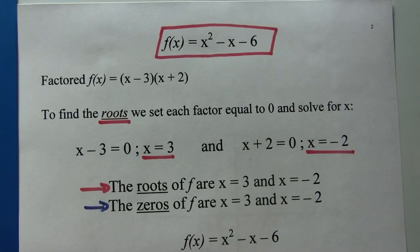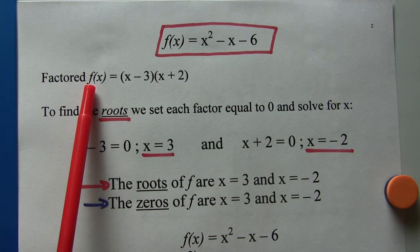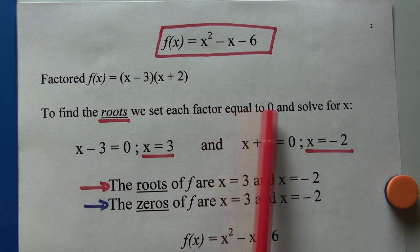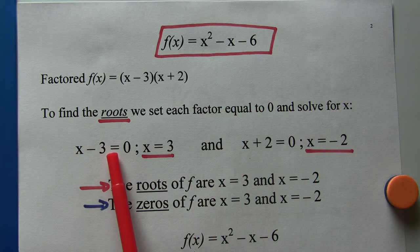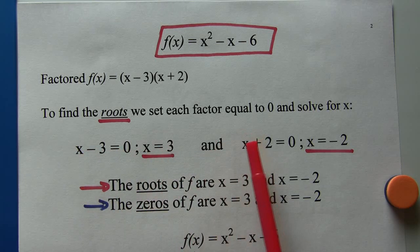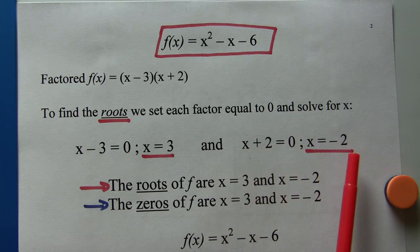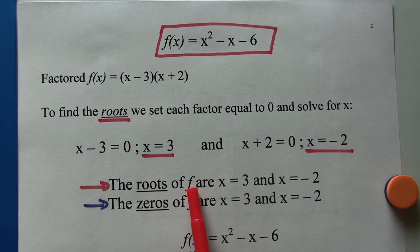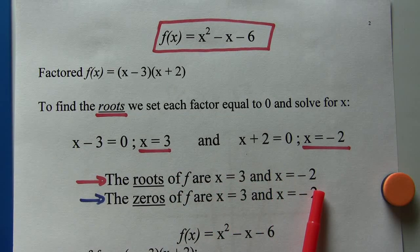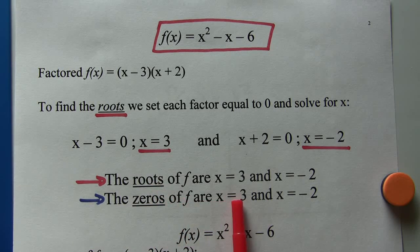We have the same polynomial. This time, though, we've turned it into a function. The factored function f of x is x minus 3 times x plus 2. To find the roots, we set each factor equal to 0 and solve for x. For instance, x minus 3 is 0, we add 3 to both sides, so we get x is 3. Same idea here, x plus 2 is 0, so we subtract 2 from both sides, we get x equals negative 2. So the roots of the function f are x equals 3 and x equals negative 2. The roots and the zeros are the same thing. The zeros of the function are x is 3 and x is negative 2.